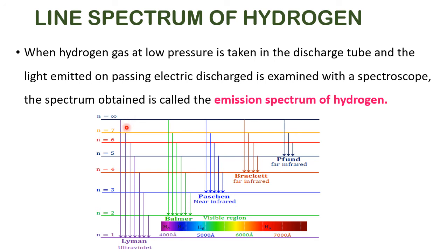The gaps between energy levels decrease as you move from the nucleus outward. Transitions from higher levels to the ground state are described by Lyman. Depending upon the discoverer, names are kept: Lyman, Balmer, Paschen, Brackett, and Pfund. Only the Balmer series is visible because its wavelengths are in the range of 400 nm to 715 nm — the visible spectrum range. The others fall in the ultraviolet or infrared regions, which our eyes cannot detect.